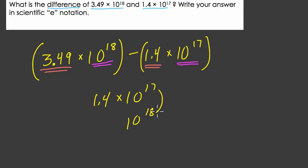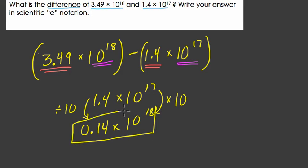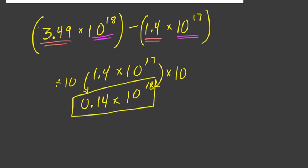Now if I think about that, if I want 18, that means I have to multiply 10 to the 17th by 10 one time. And to balance that, to maintain equivalence, I divide by 10 on this side, and I get 0.14, decimal over once to the left. So now I have the same number written in a different way, right? Written with 10 to the 18th in it. So now I can subtract directly.